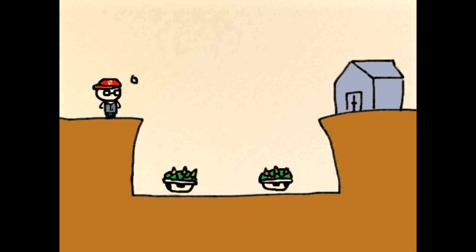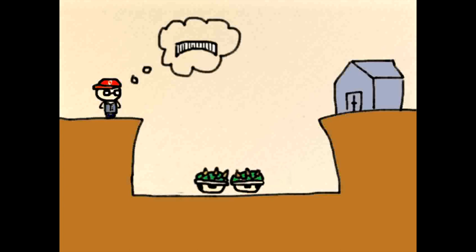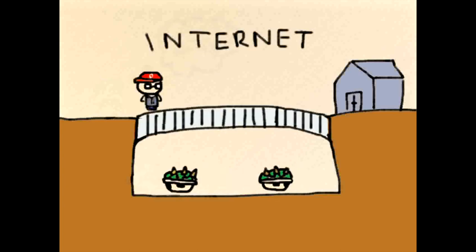To get to these warehouses, Mr. Mario needs a bridge. And this bridge is called the internet. Using the internet, he can now access the warehouses.